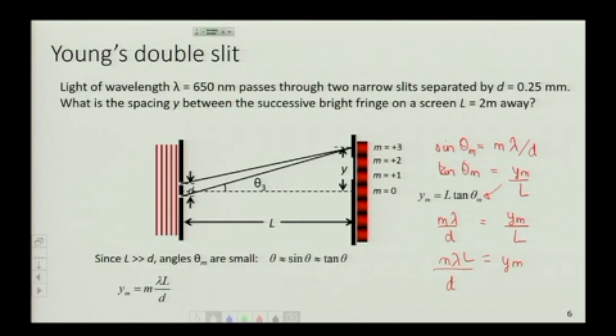So y1 is lambda l over d, y2 is 2 lambda l over d, y3 is 3 lambda l over d. So whatever the distance from the 0th order fringe to the 1st, the distance between that and the 2nd is double that, the distance between that and the 3rd is 3 times that.